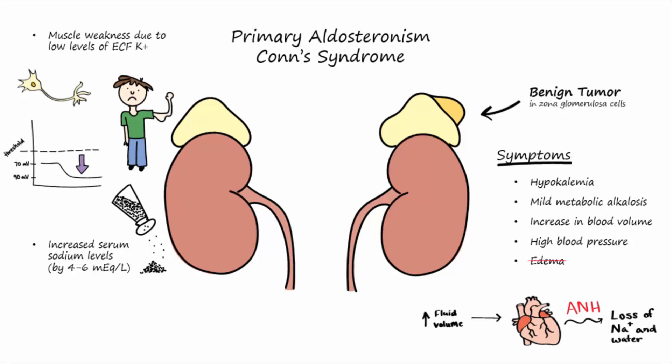An important diagnostic feature of primary aldosteronism is a decrease in plasma renin levels. This comes from the fact that high blood volume will suppress the release of renin by the kidneys. Surgical removal of the tumor is the most common treatment.